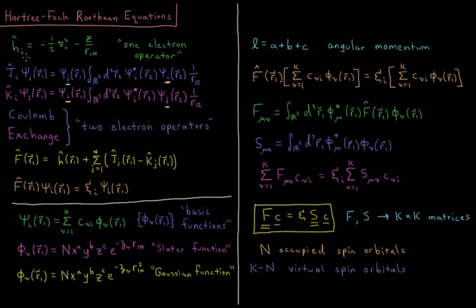From the previous Hartree-Fock videos, we have a one-electron operator h_i for every individual electron i, which is equal to its kinetic energy operator minus one-half del-squared_i, plus its potential energy attraction to the nucleus, minus the charge of the nucleus over the distance from the electron to the nucleus.